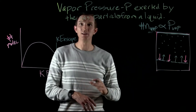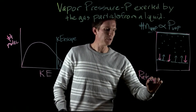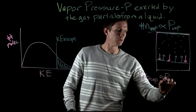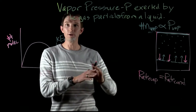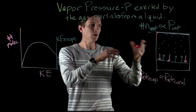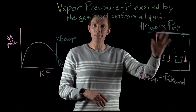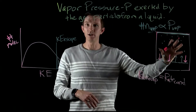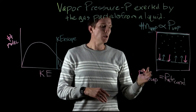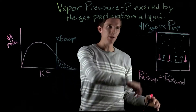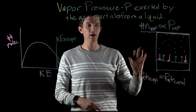At some point the evaporation rate and condensation rate become equal to each other. That's the place where we've reached equilibrium — we're evaporating off at the same rate that we're condensing, so we have a constant amount of particles sitting above our liquid. At that point we're going to have a constant vapor pressure, because we have the same number of particles leaving as coming back in.